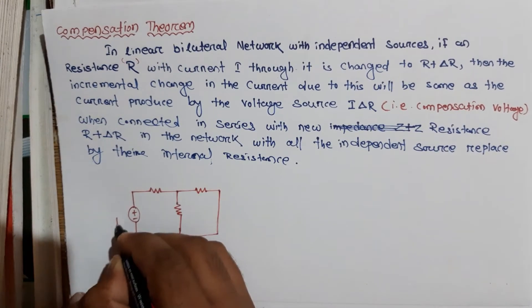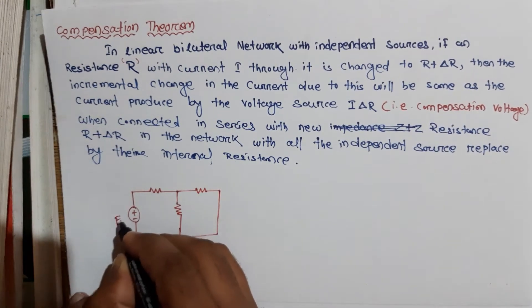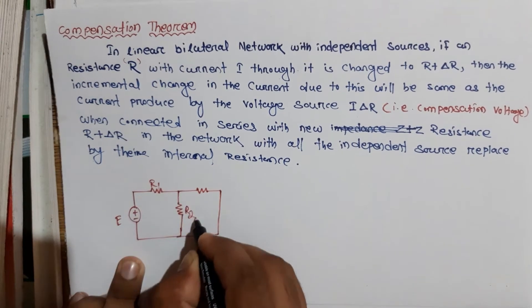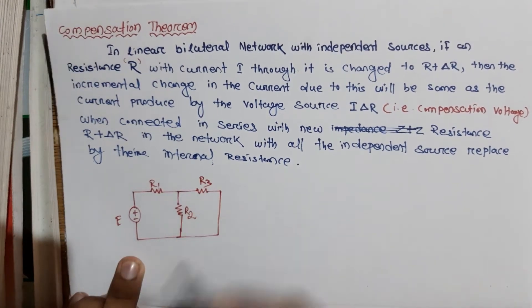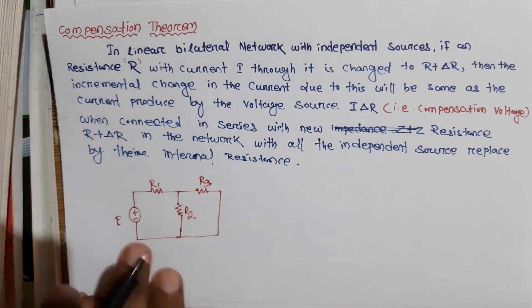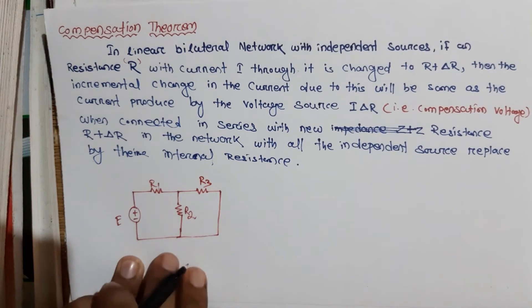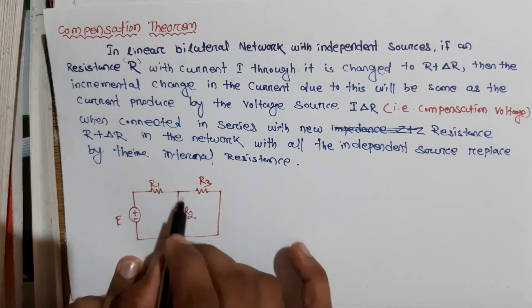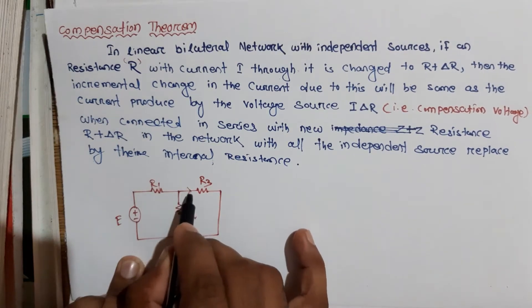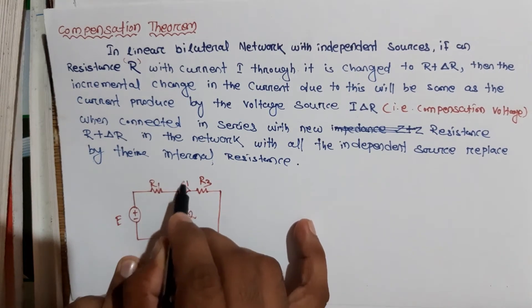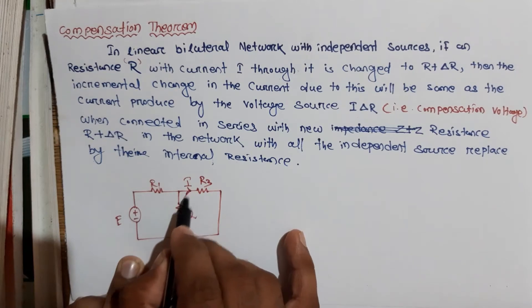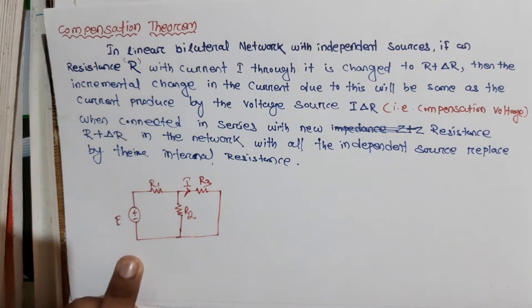Let this be the source E, with R1, R2, and R3 — this is a linear bilateral network. A branch current I flows through this network.